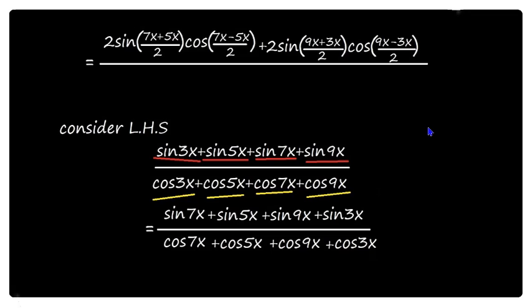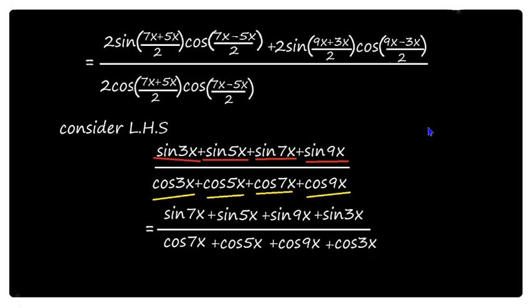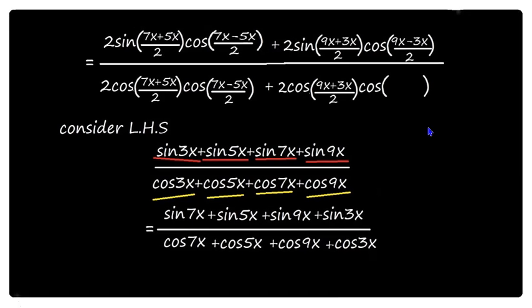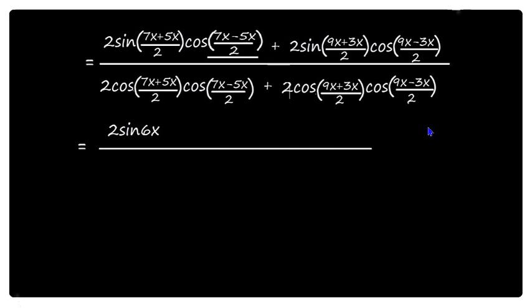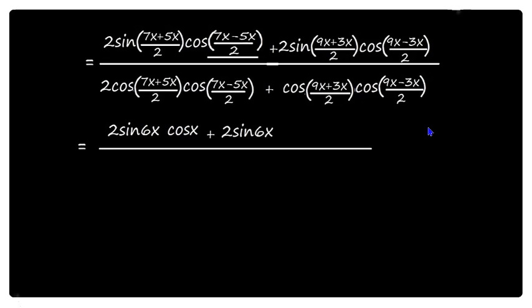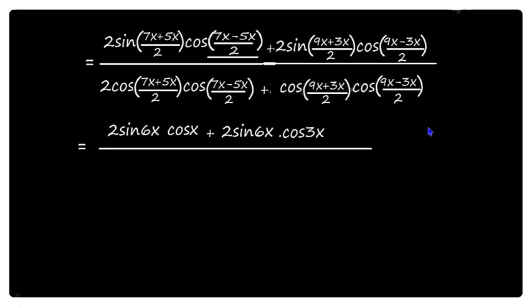Similarly apply cos x plus cos y = 2 cos((x+y)/2) into cos((x-y)/2) in the denominator. For cos 7x plus cos 5x: 2 cos((7x+5x)/2) into cos((7x-5x)/2). For cos 9x plus cos 3x: 2 cos((9x+3x)/2) into cos((9x-3x)/2). Simplifying: numerator gives 2 sin 6x cos x plus 2 sin 6x cos 3x; denominator gives 2 cos 6x cos x plus 2 cos 6x cos 3x.